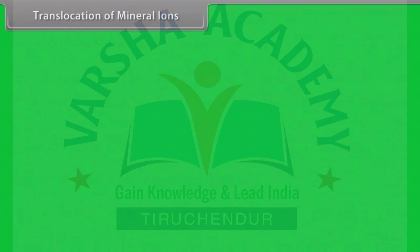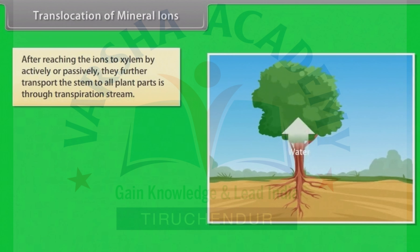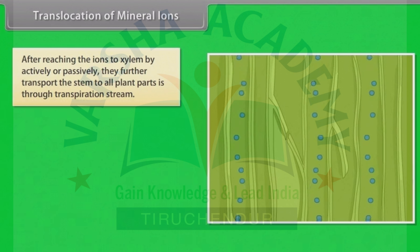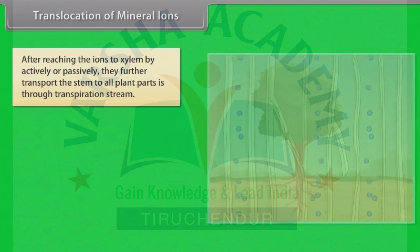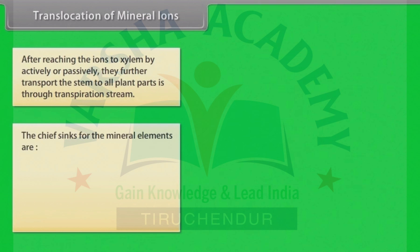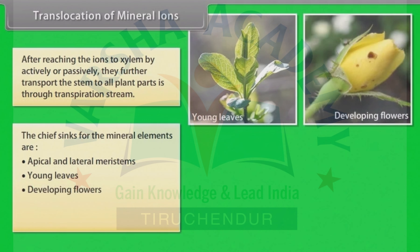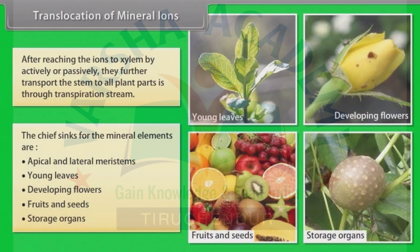After the ions have reached xylem through active or passive uptake, or a combination of the two, their further transport up the stem to all parts of the plant is through the transpiration stream. The chief sinks for the mineral elements are the growing regions of the plant, such as the apical and lateral meristems, young leaves, developing flowers, fruits and seeds, and the storage organs.